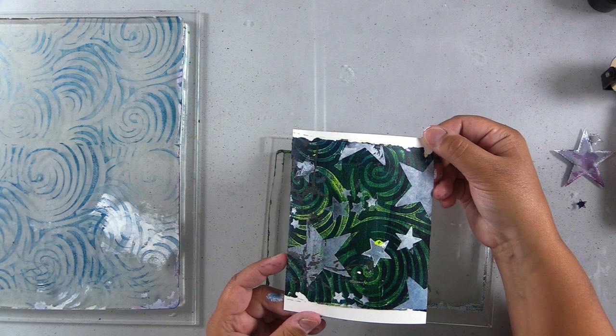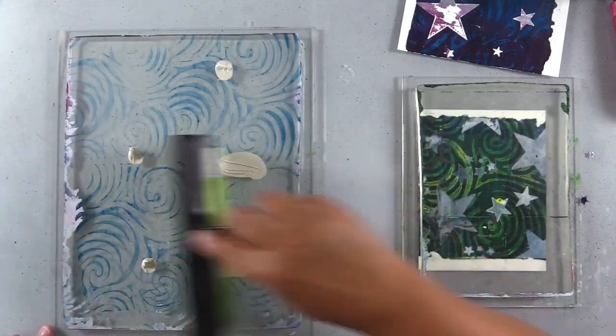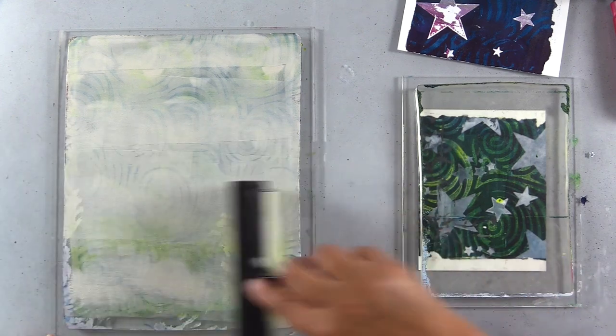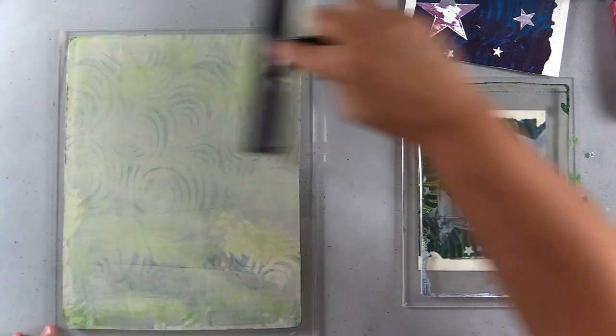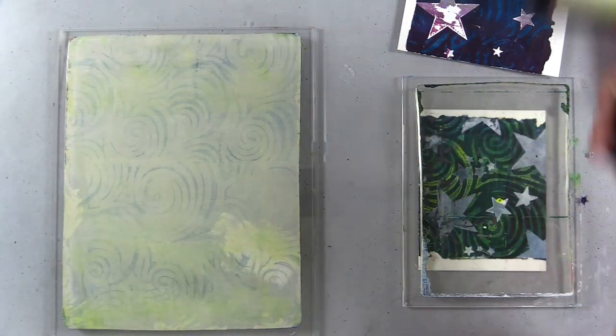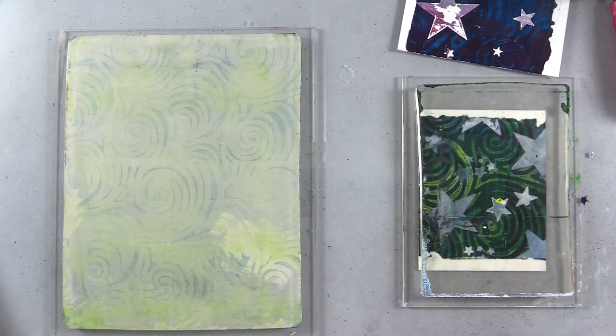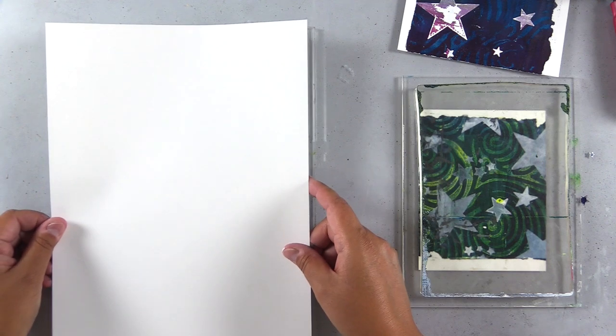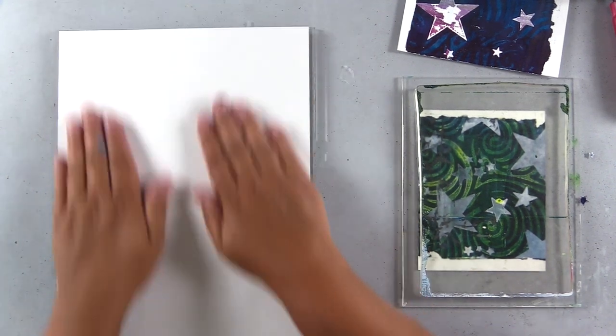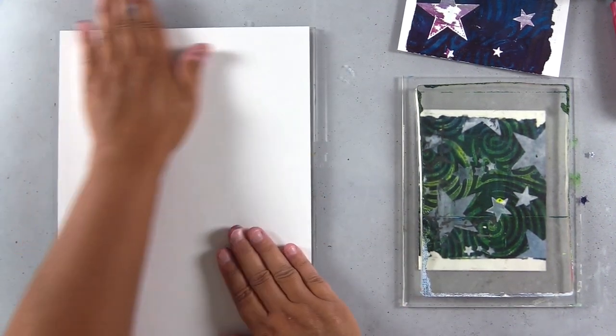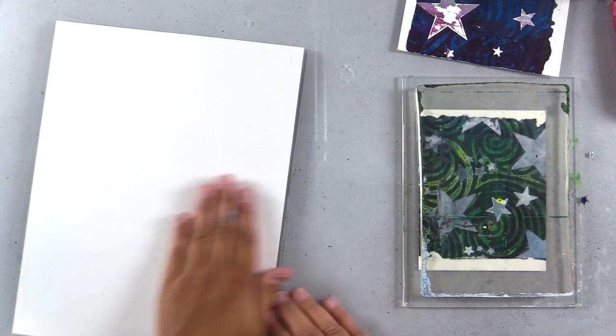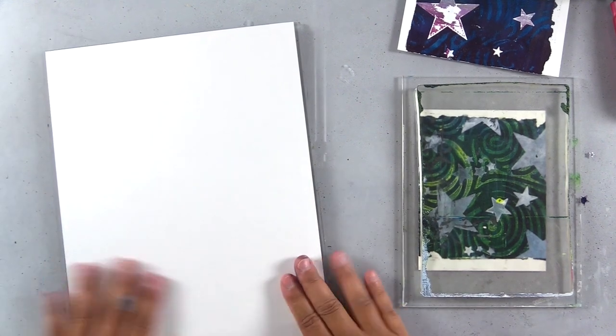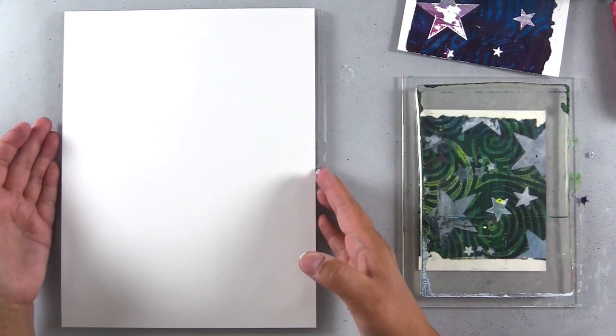So you see what I mean? I feel like the white and the green is a little jarring, they don't really go. I wish I had gone with white for the whole thing. Here I've added some buff titanium to the eight by ten gel plate, and I will pull this entire print. And there was a little bit of green left over on the brayer, so you can see that mixed in as well.